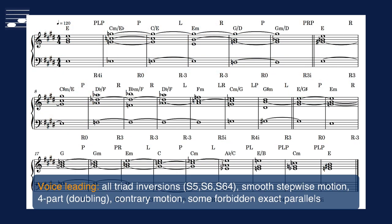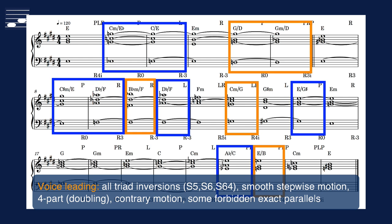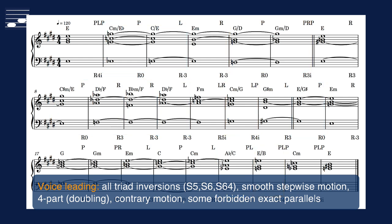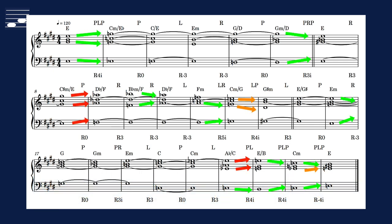The example uses triads in root, first and second inversion position, as indicated by the colored rectangles. The setting is in four parts doubling one note from the triad. I aim for smooth, stepwise voice leading preventing forbidden exact parallel fifths and octaves. The voice leading arrows demonstrate correct contrary motion in green, acceptable parallel motion in orange, and the occasional blunder in red.